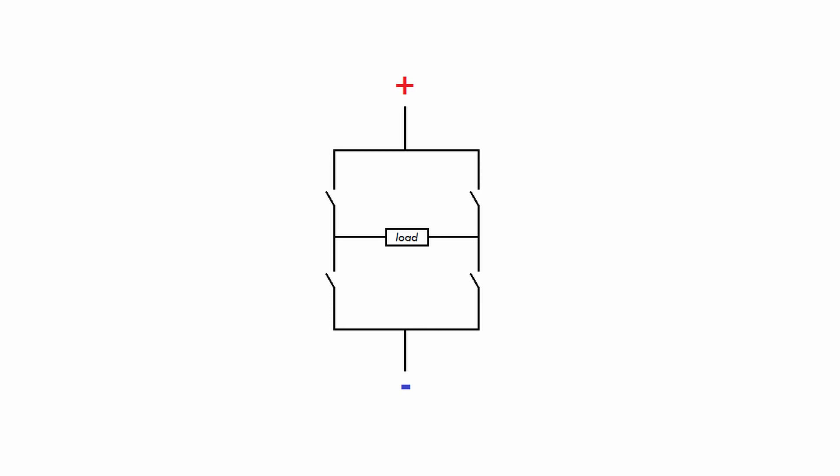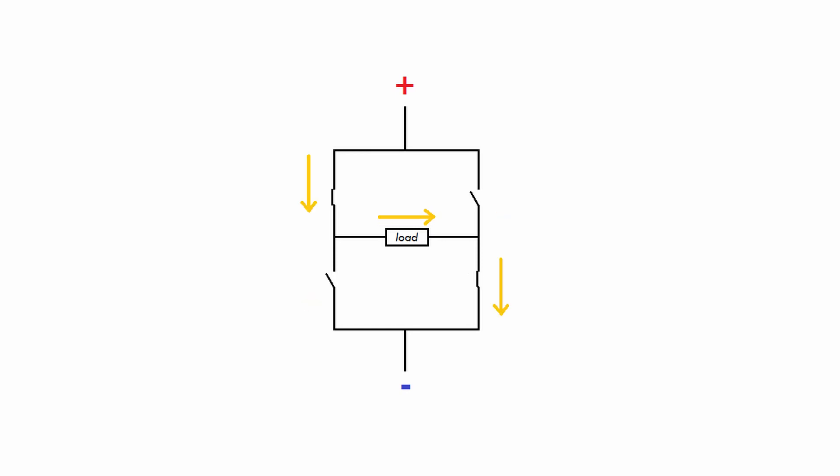If I set the switches like this, the current flows through the load from left to right. If I set the switches like this on the other hand, the current will flow through the load from right to left — in the opposite direction. And so if we switch between those two states repeatedly, we've created AC power. We just have to do that back and forth 50 times a second. It's as simple as that.